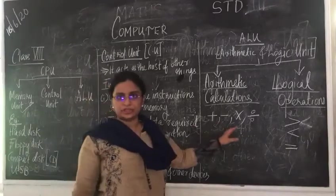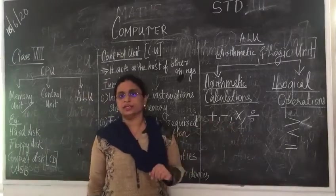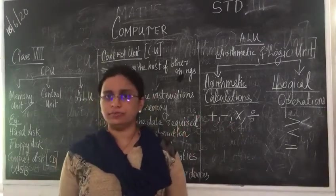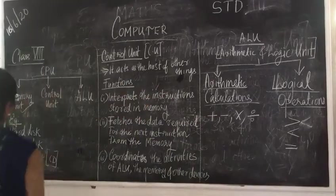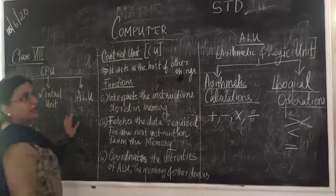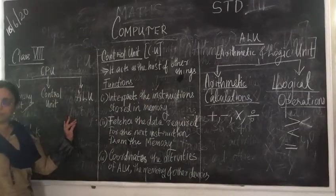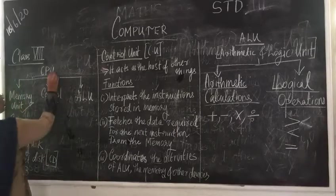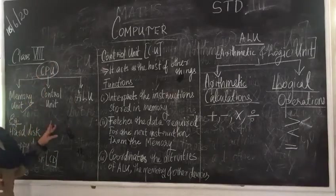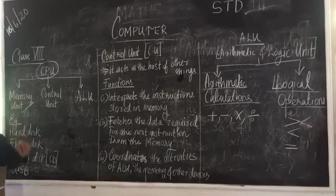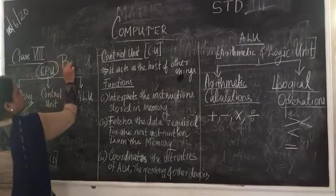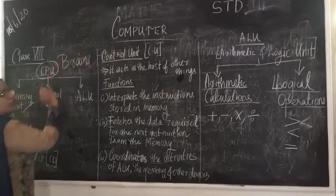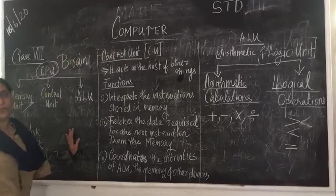This is the first action of the Continuation. The basic fundamentals of computing data. You can study the input device and output device. This is the CPU — it is a Central Processing Unit. This is the brain. The brain is CPU.